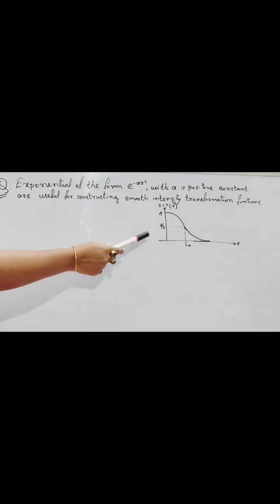In this given graph, we have to find S equals to T of R, which is the general form, transformation form. Exponential of the form e to the power minus alpha R square, where alpha is a positive constant, are useful for constructing smooth intensity transformation functions.